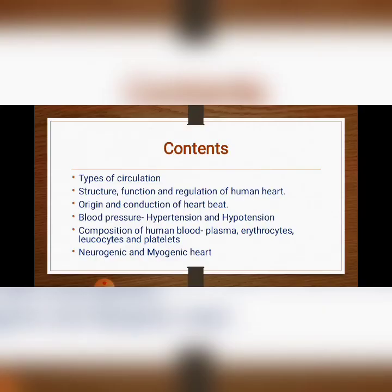Under this topic, we are going to learn about types of circulation, structure, function and regulation of human heart, origin and conduction of heartbeat, blood pressure — including hypertension and hypotension — composition of human blood which includes plasma, erythrocytes, leukocytes and platelets, and the last one is neurogenic and myogenic heart.